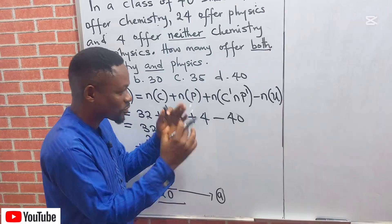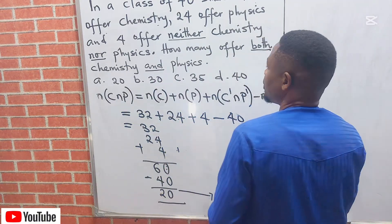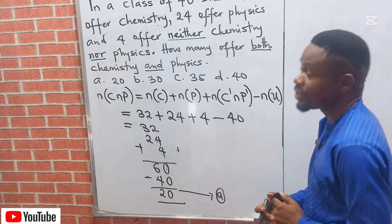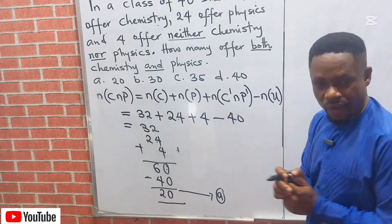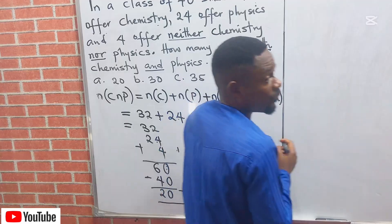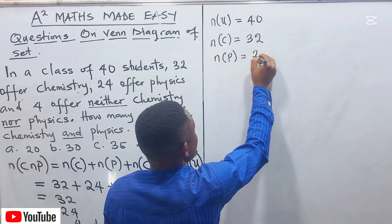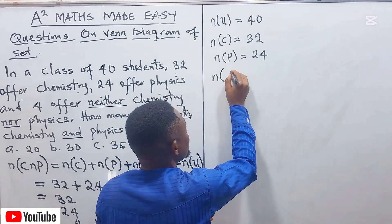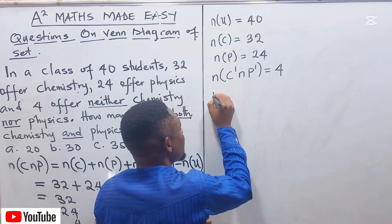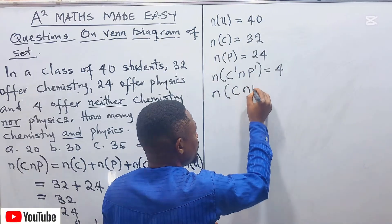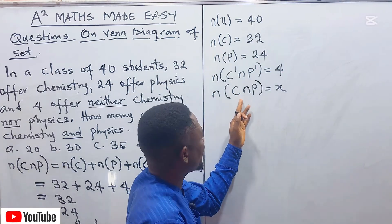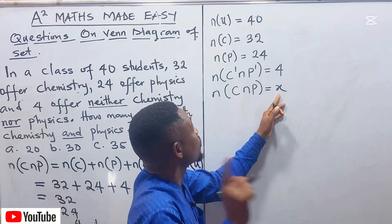Now let me also show you how to solve it without the fastest method. The universal set is 40 students. 32 offer chemistry, 24 offer physics, and 4 offer neither chemistry nor physics. We are looking for the number that offer both chemistry and physics — we don't know it, so call it X. We use the intersection value X to subtract from each set.